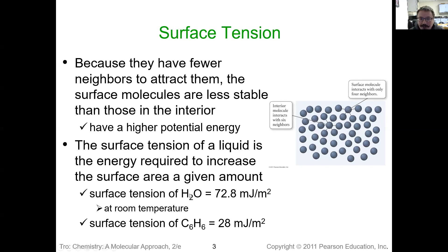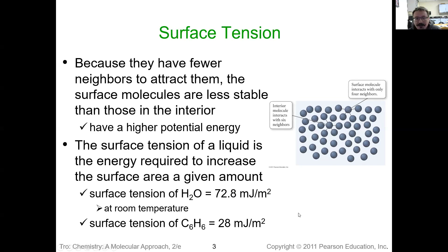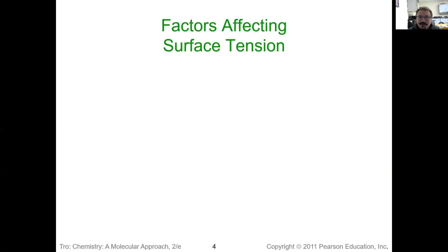We have two examples: water and benzene. Water has not only London dispersion forces and dipole-dipole interactions, but also hydrogen bonding, whereas benzene only has London dispersion forces. That's why the surface tension for water is a much larger value — it requires more energy to get water to spread out than it does for benzene. That's what surface tension is.